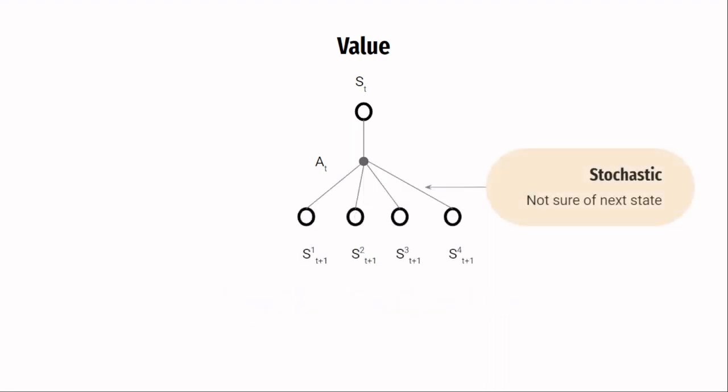But if the environment is stochastic, which means that taking action a on state s can lead to a number of states, then the returns for all of these states have to be considered. And since we consider the probabilities of the agent falling in these states, it makes sense to apply an expectation in the value function.